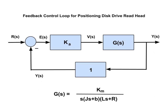The transfer function G is given below. It is Km over S times quantity Js plus B times quantity Ls plus R. The terms S and Js plus B in the denominator are associated with the mechanics of the disk drive arm. The terms Ls plus R in the denominator and Km in the numerator are associated with the voice coil actuator.